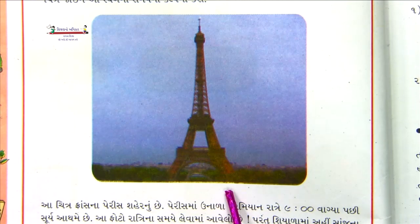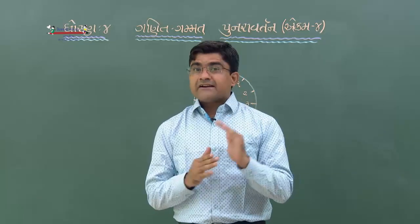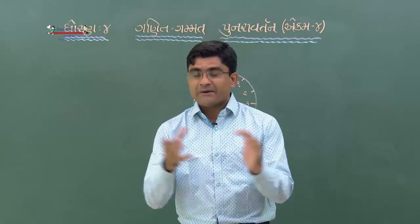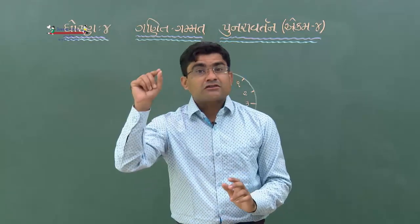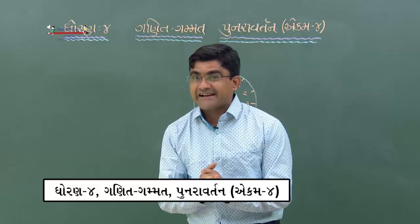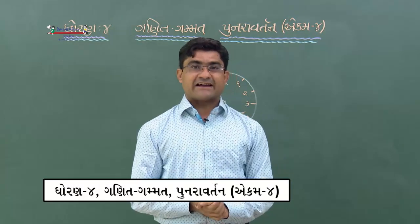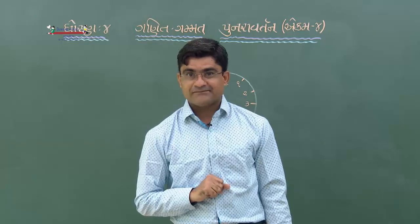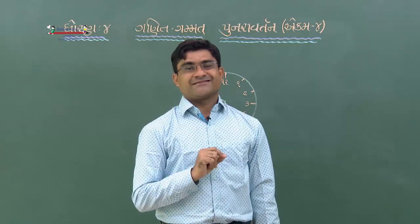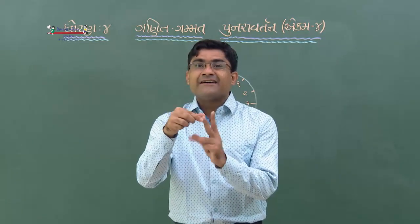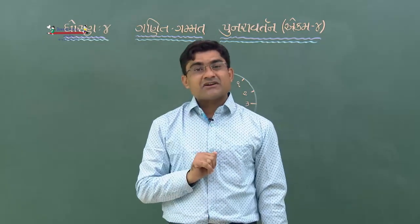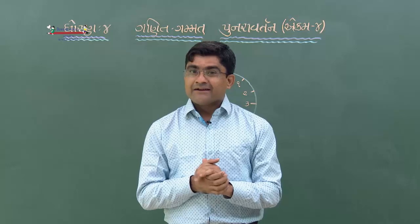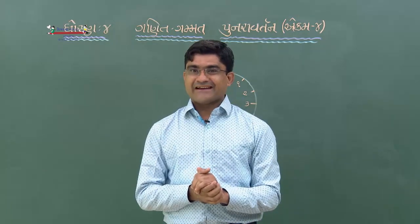આપણે મિનિટ કાંટો ત્રણ પરથી ચાર પર આવે તો કેટલો સમય થાય? 8 પરથી 10 પર - સાબાશ! 8 પછી 9 અને 10 - એટલે 2 અંક, 2 ગુણ્યા 5 એટલે 10 મિનિટ. આ જ રીતે કામ કરવામાં કેટલો સમય થાય છે તે સમજવાનું.